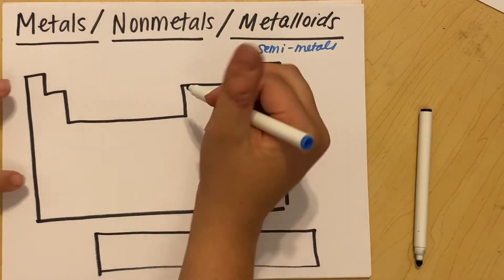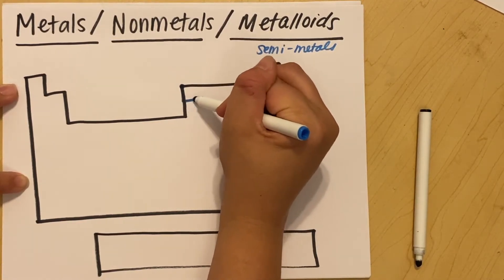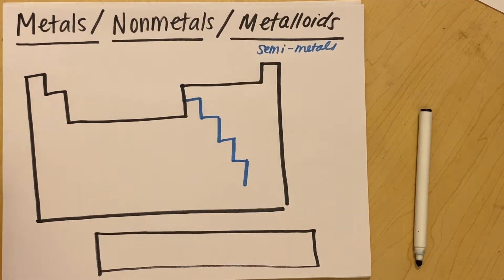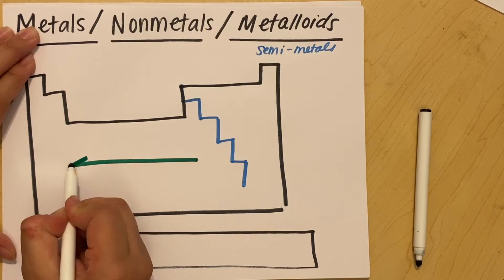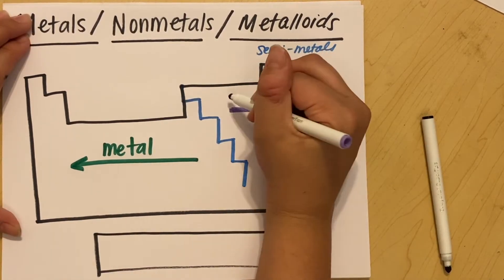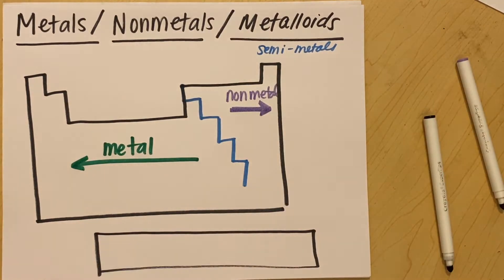And then along the stair step, we have some semi-metals or metalloids. There's my best picture of a periodic table for you. And we'll do the same thing. So you would start up at this corner right here to draw your stair step. Down, over, down, over. We'll just relabel it. Anything on this side is a metal. Anything on this side is going to be a non-metal.